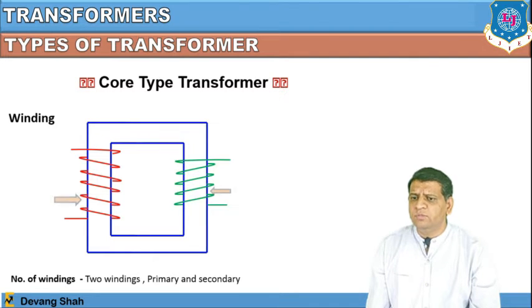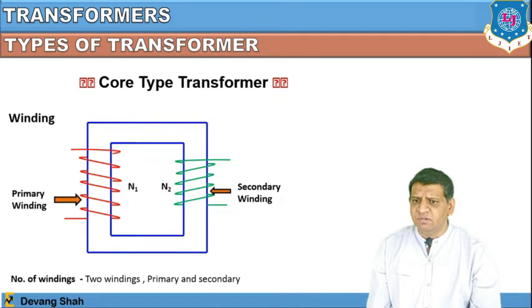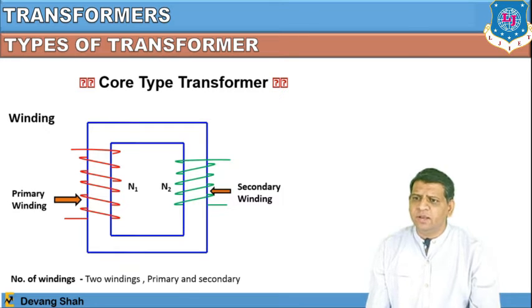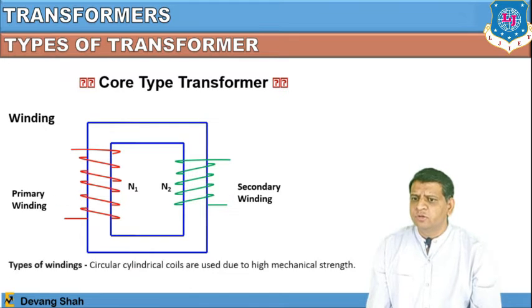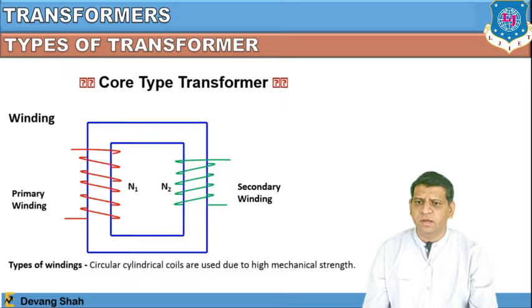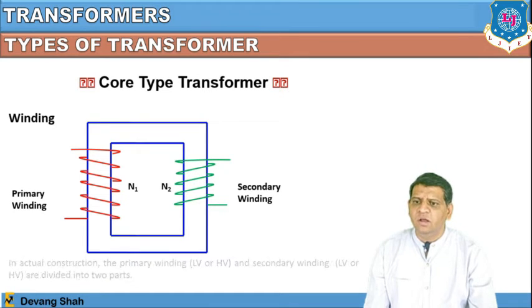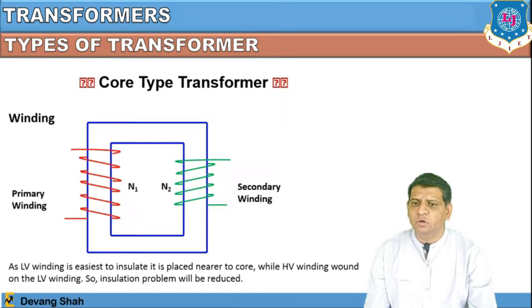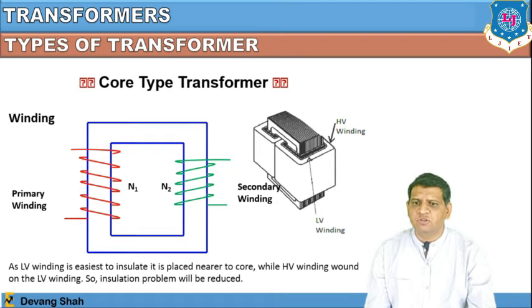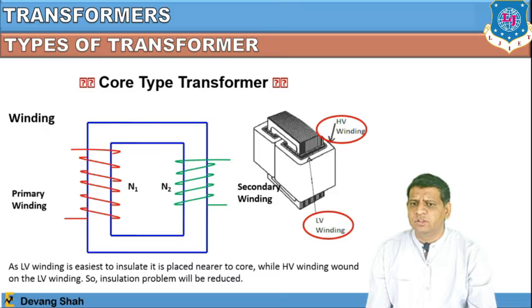Now let us discuss the winding of the core type transformer. There are two windings: a primary winding with N1 turns and a secondary winding with N2 turns. The winding shape is a circular cylindrical coil for high mechanical strength. In actual construction, the low voltage winding is easiest to insulate and is placed near the core, while the high voltage winding is wound on top of the low voltage winding to reduce insulation problems. You can see this in the core type transformer figure where two cylindrical windings are placed over the two limbs.